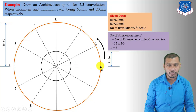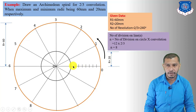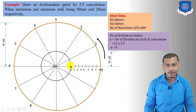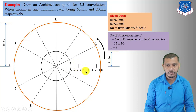Give the numbering on the divisions starting from zero on the outer circle side: 0, 1, 2, 3, 4, 5, 6, 7, 8. Here the numbering is given from the outer circle inward, so P0 is on the outer circle.